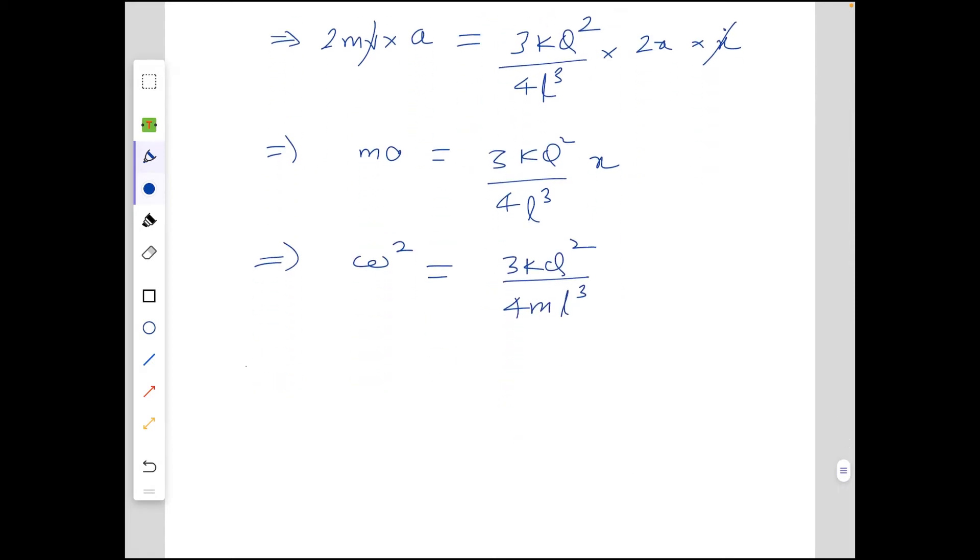So the time period for the motion is equal to 2π/ω which equals 2π times the square root of 4mL³/(3kQ²). And that's the time period of the motion. Thank you.